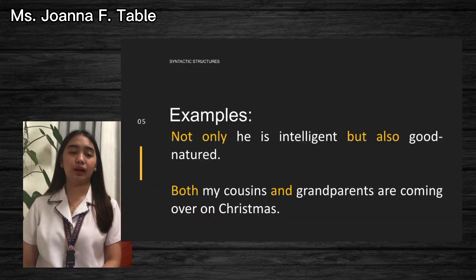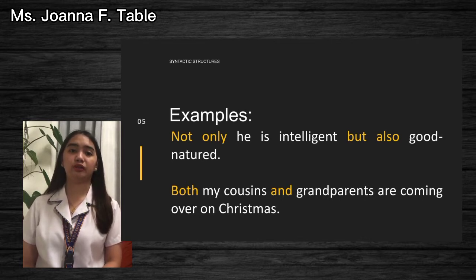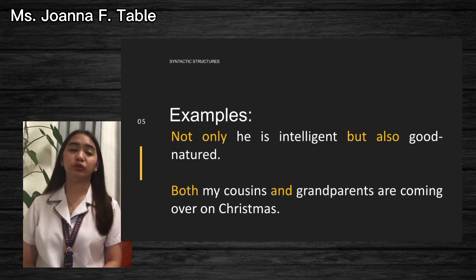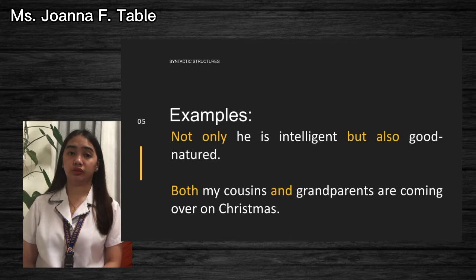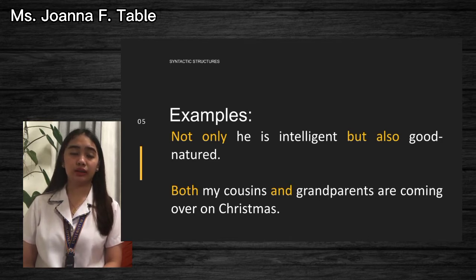Here are some examples to show how to use correlatives. 'Not only is he intelligent, but also good-natured.' In this statement, it shows that the person does not only have one good character but two good characters. That is why we use the correlative 'not only...but also.'